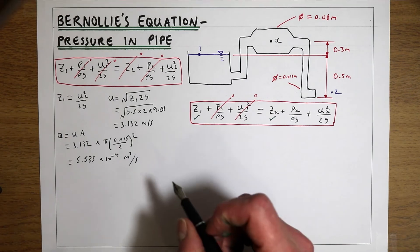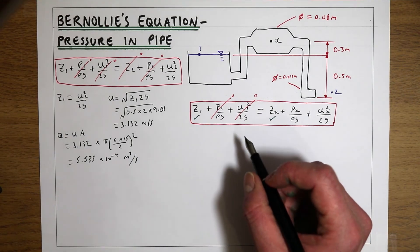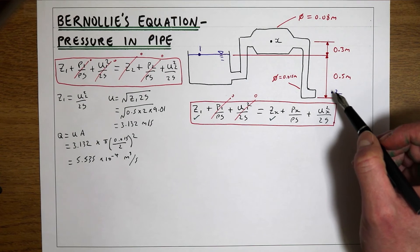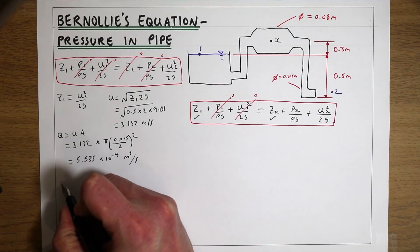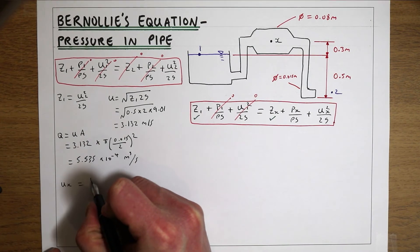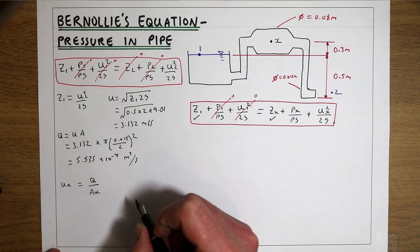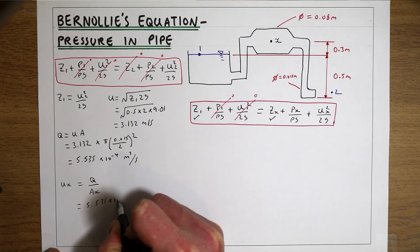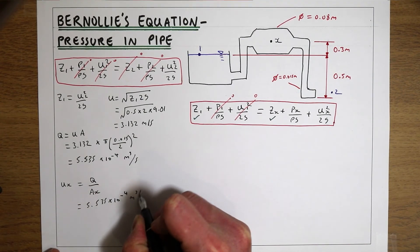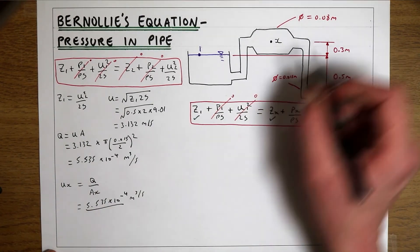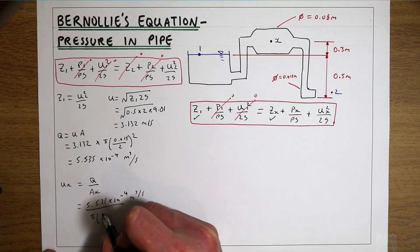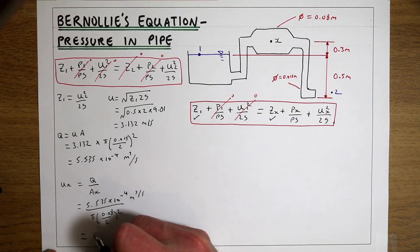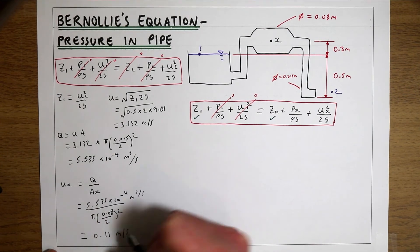The key to this problem is that within a steady system with an incompressible fluid, the flow is the same at every point — so the flow at X equals the flow at point 2. We can now work out Ux = Q / Ax. That's 5.535 × 10⁻⁴ m³/s divided by the area at X, where area = π × (diameter/2)², which gives us a velocity at X of 0.11 metres per second.